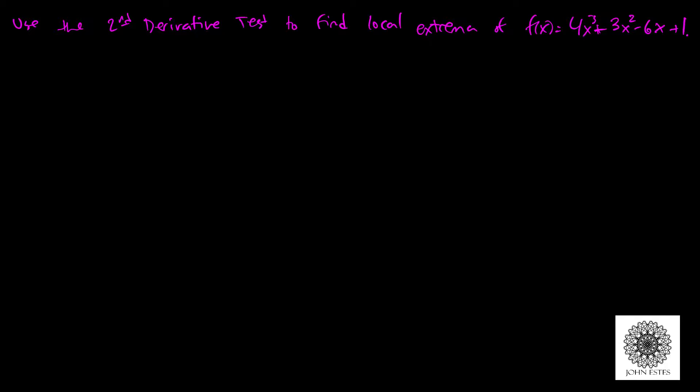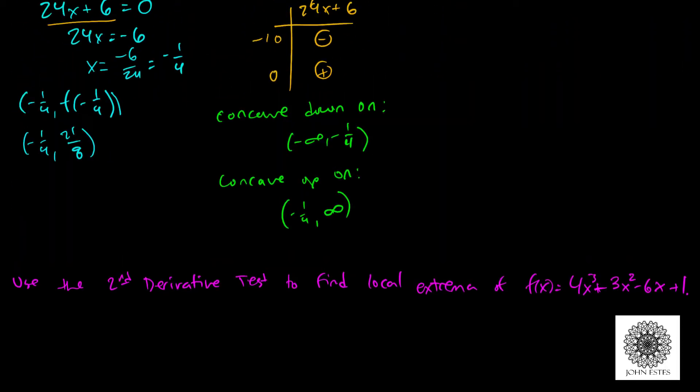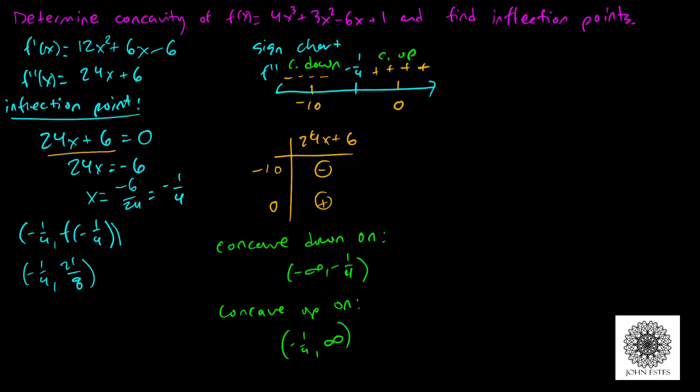the previous example. We have our sign chart. Here's what we did earlier. The only thing we need to consider now is, in addition to the inflection point, we also need to figure out what's going on with my critical points. My critical points come from the first derivative, and so